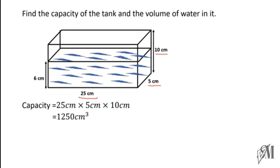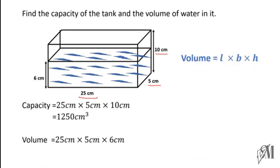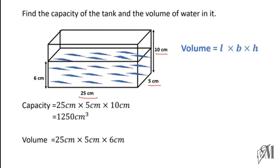Now let's calculate the volume of water. When it comes to the volume of water, the water takes the cuboidal shape but the height is different — since it is not completely filled, the height of the water column is only 6 centimeters. Therefore, instead of the full height, we substitute 6 centimeters, and the answer becomes 750 cubic centimeters.